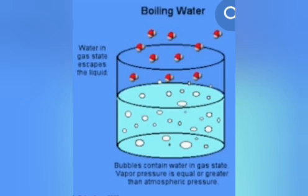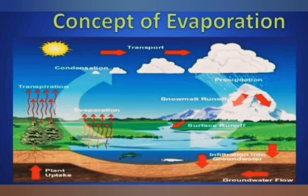The next process is vaporization or boiling. The process during which a liquid on heating changes into its gas state at a particular temperature is known as vaporization or boiling. Next is evaporation: the change of a substance from its liquid state to its gas state at any temperature below its boiling point is known as evaporation.